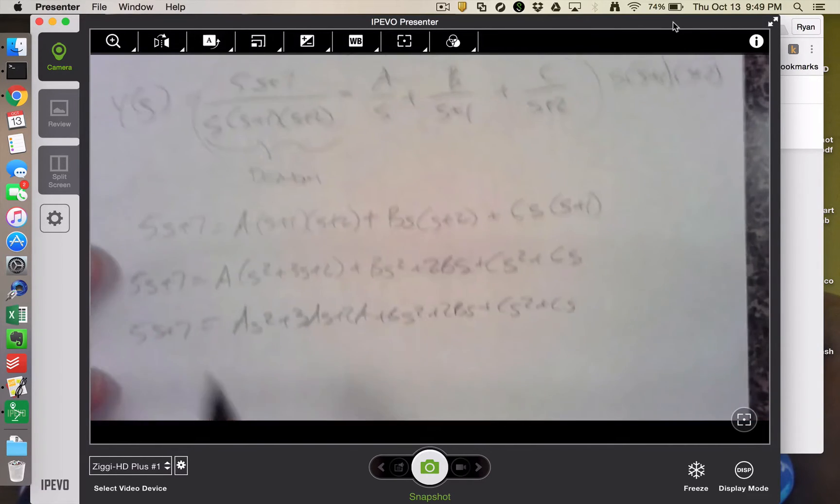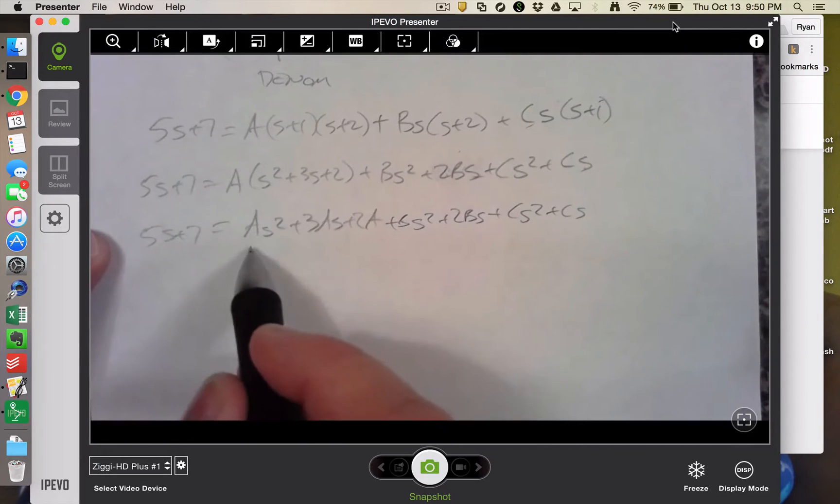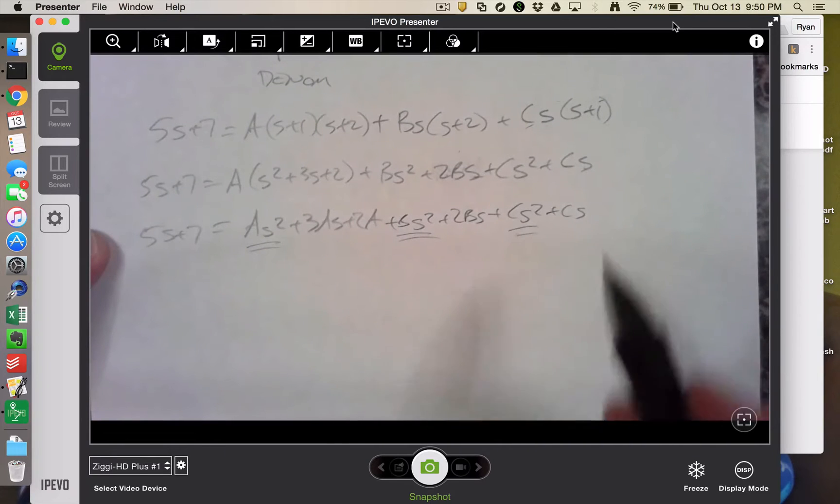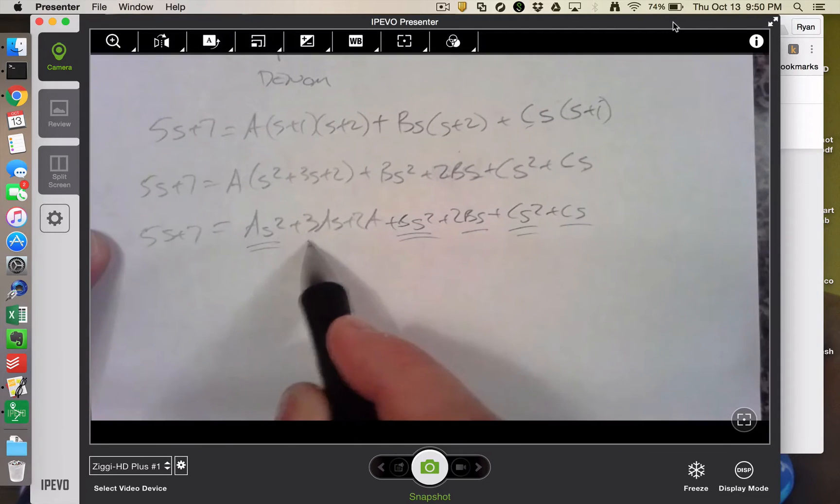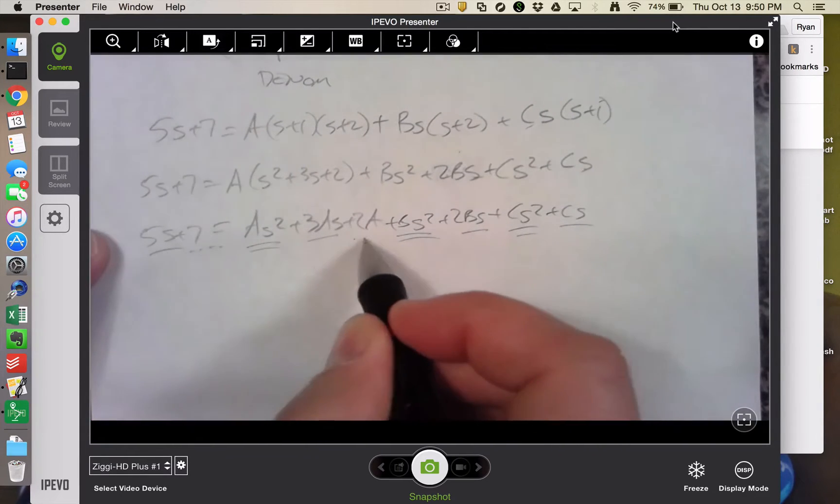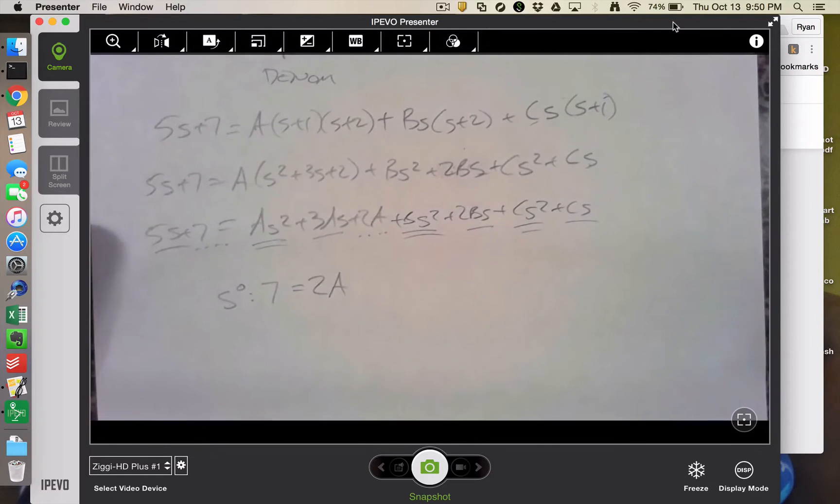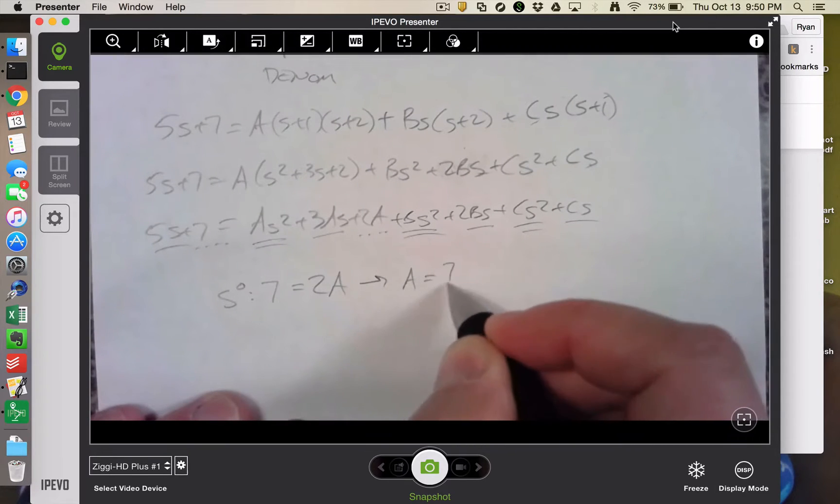So if this is going to be true for any power of s, I can take my coefficients individually. I've got s squared terms, I've got s to the first terms, and then I've got s to the zero terms. So I'm going to start with s to the zero. 7 is equal to 2a. So I can solve that rather easily. And a is equal to 7 halves.